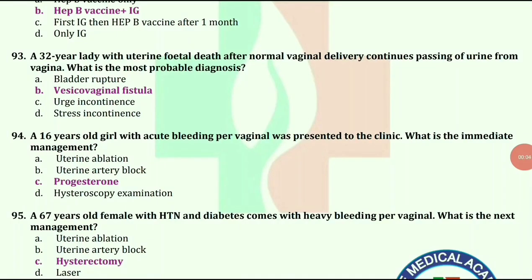A 32-year-old lady with intrauterine fetal death after normal vaginal delivery, with continuous passing of urine from vagina. What is the most probable diagnosis? The answer is vesicovaginal fistula.